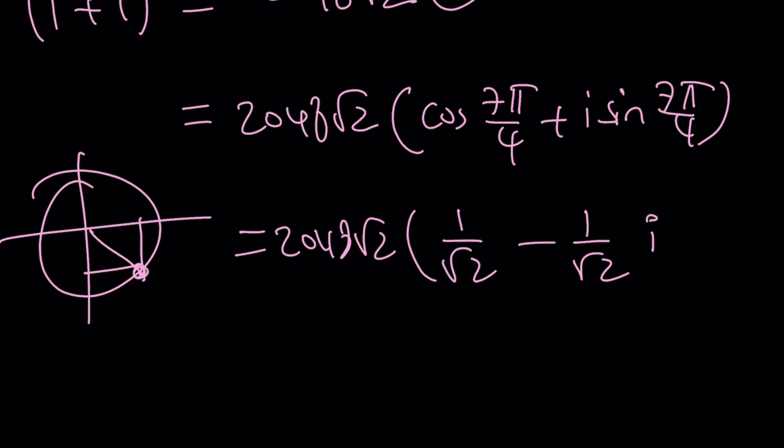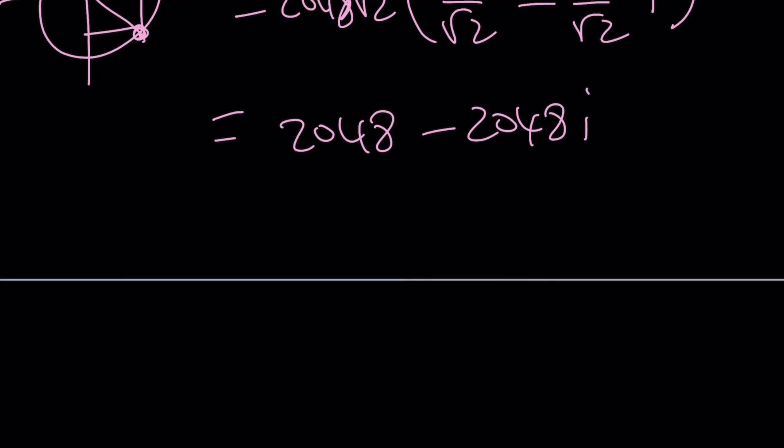And when you distribute this number over, you're going to get 2048 minus 2048i, which you can write as 2048 times, if you want, 1 minus i. And that's going to be the answer. Either way is fine.